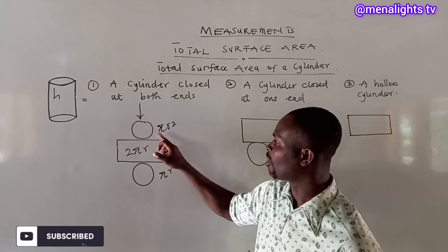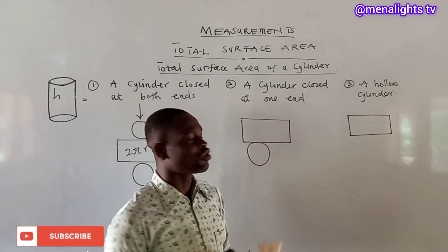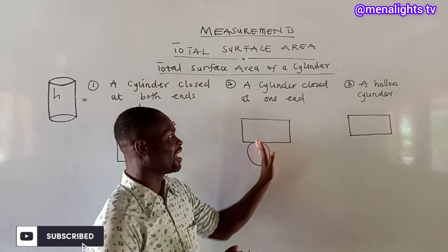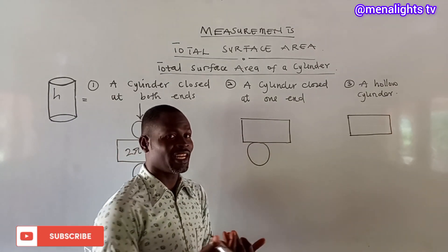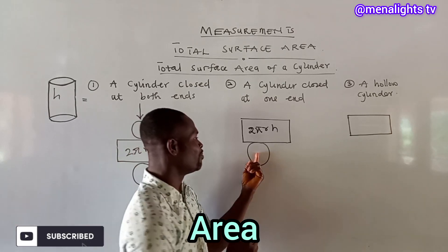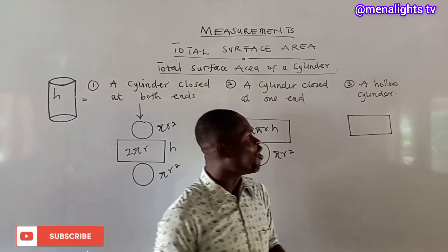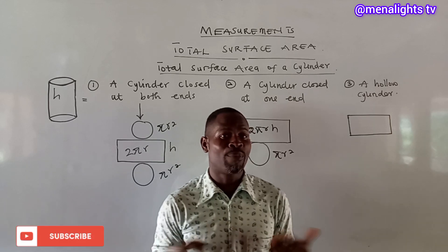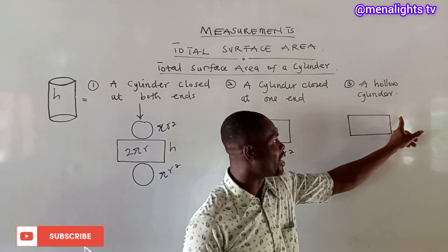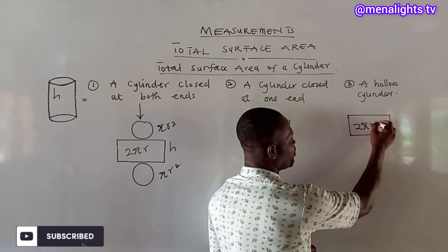So the circular base or the circular top each gives πr². Now for the cylinder closed at one end, we have one circle and the rectangle, giving πr² plus 2πrh. Then we come to the third type — a hollow cylinder, meaning the cylinder is open at both ends. Its total surface area is therefore 2πrh.